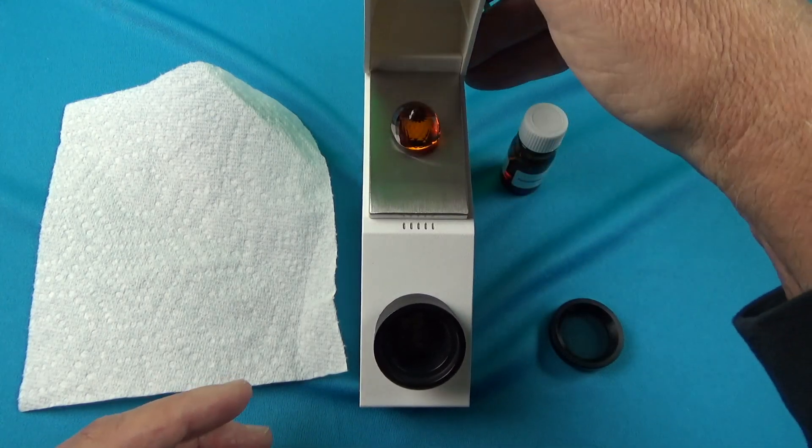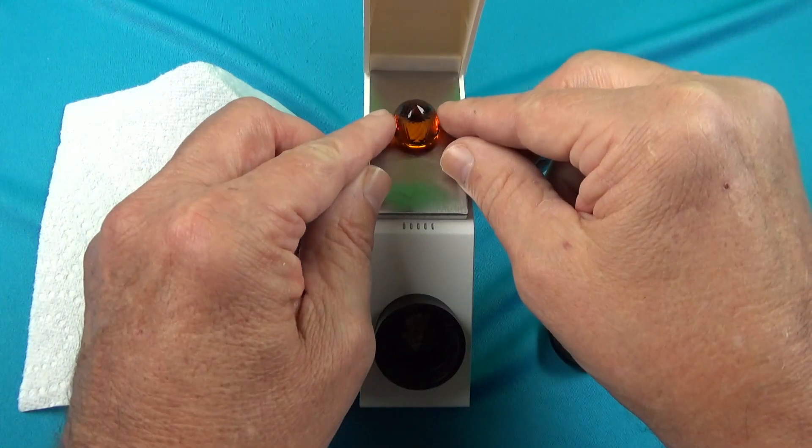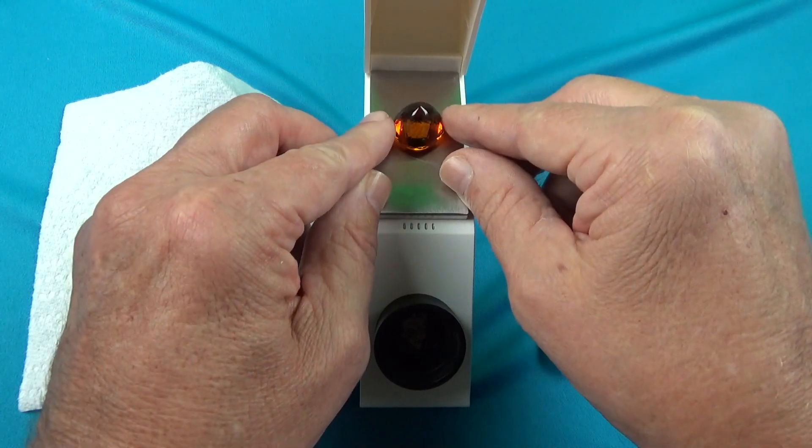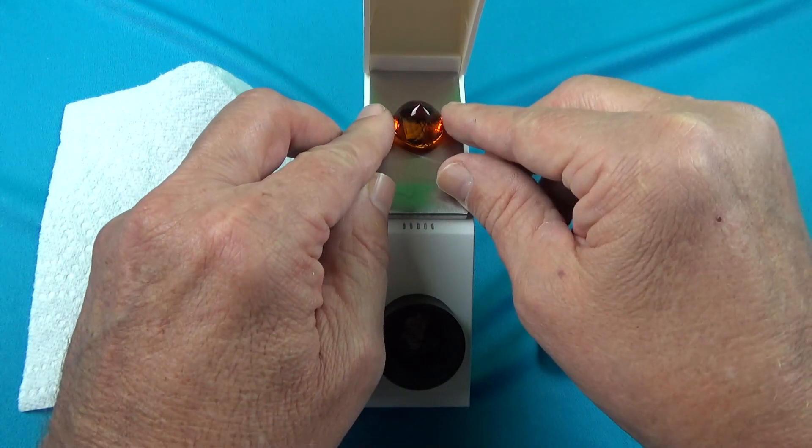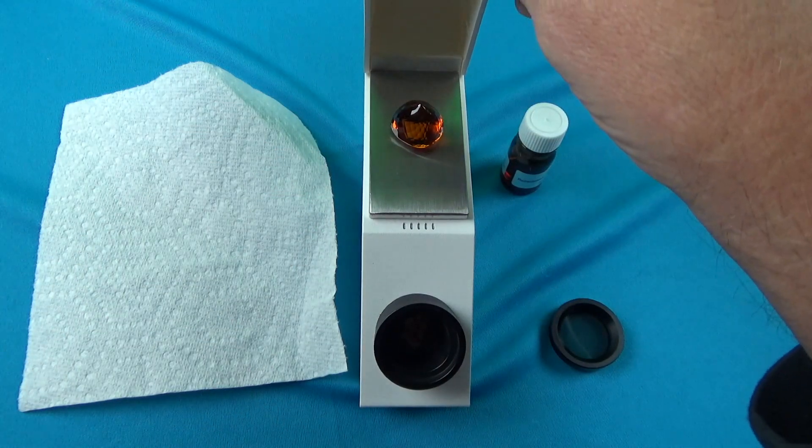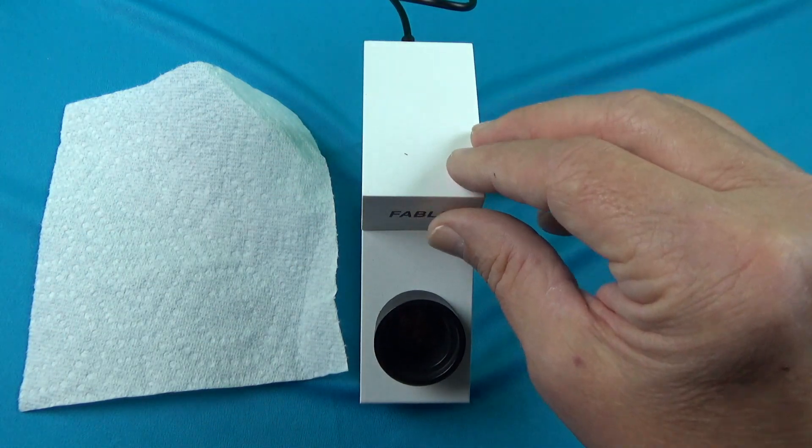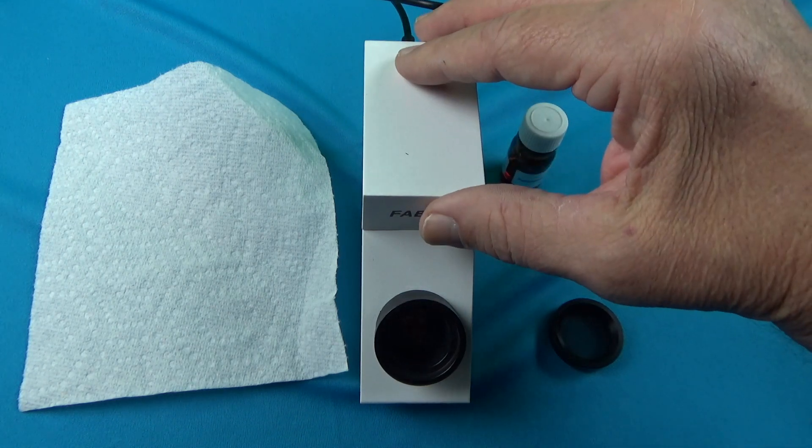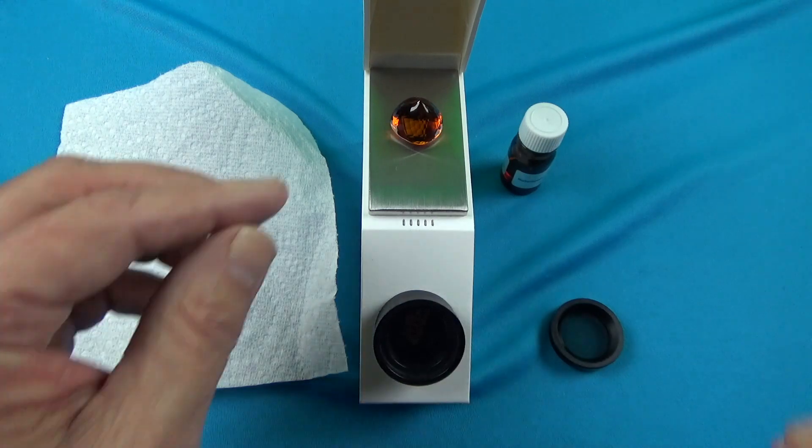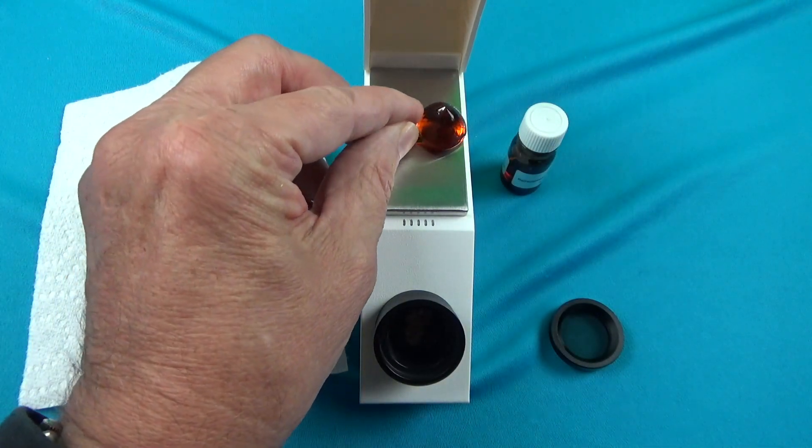Close the lid and make sure to always close that lid. You'll be rotating the stone like this very carefully. When you take your multiple readings, you'll be rotating the stone, and that's going to give you multiple RI readings for the gemstone, so you can get a good refractive index reading or a set of readings.